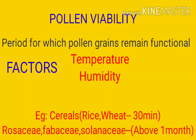Pollen viability depends on two main factors: temperature and humidity. High temperature leads to dryness and decreases the viability period, while high humidity and low temperature will increase the viability period. Also, viability may differ from species to species.